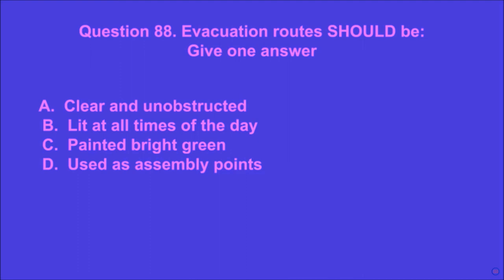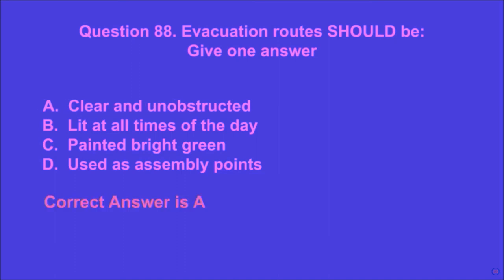Question 88: Evacuation routes should be — give one answer. A: clear and unobstructed, B: lit at all times of the day, C: painted bright green, D: used as assembly points. A is the correct answer.